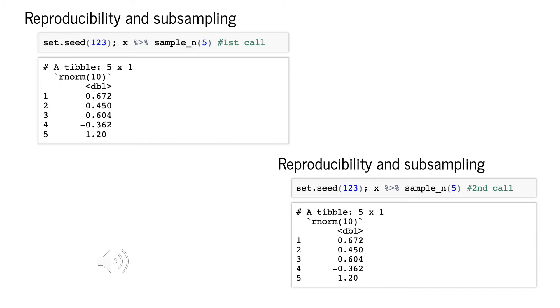If we want our random sample to be reproducible, we need to use R's base function set.seed to which we supply an argument which is a unique integer code. Here, we're using the simple number 123.